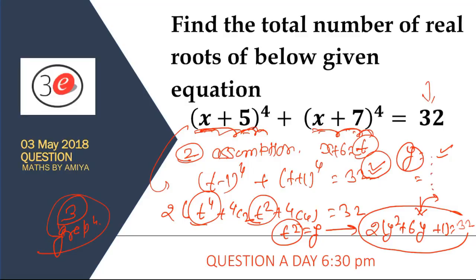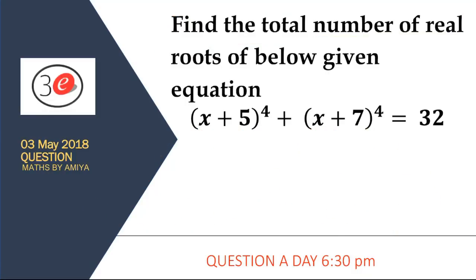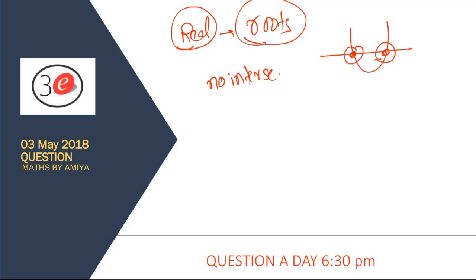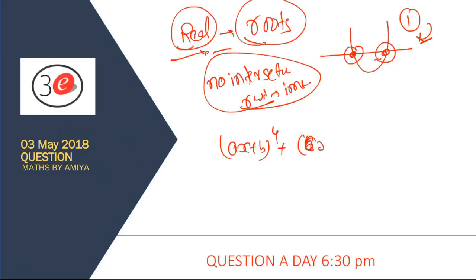The second method is the graph method. Before knowing the graph method, we should know few basic concepts. Roots are the values where graph intersects the x-axis. If no intersection, you have imaginary roots. If the graph intersects with x-axis, we have real roots.